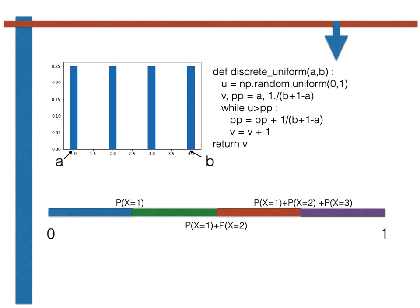As you can see, a uniform random variable, a uniform continuous random variable is generated here by calling np.random.uniform.